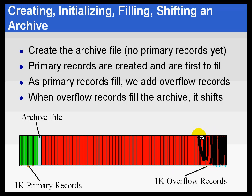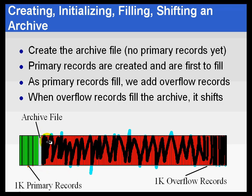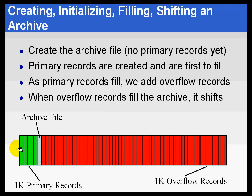As time goes on, these overflow records will eventually fill. When they fill to a user-definable threshold where very little room is left, we do an archive shift. We allow a little bit of space to remain because we want people to still be able to add out-of-sequence data, like manual input. So we first create primary records when we initialize the archive, and then over time overflow records generate from the end of the record backwards.